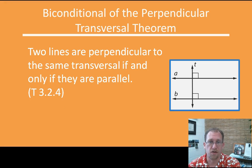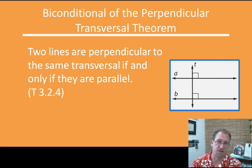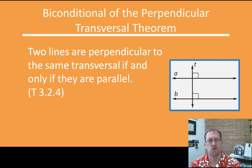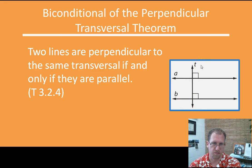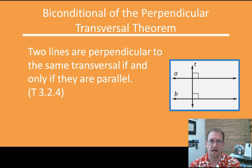The perpendicular transversal is the same idea, so we're going to have the biconditional of this. Two lines are perpendicular to the same transversal if and only if they are parallel. So if they are perpendicular to the same transversal, then they are parallel. If they are parallel, then they are perpendicular to the same transversal. This should hopefully be really, really easy for you to acquire today.